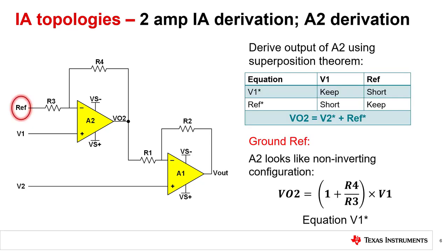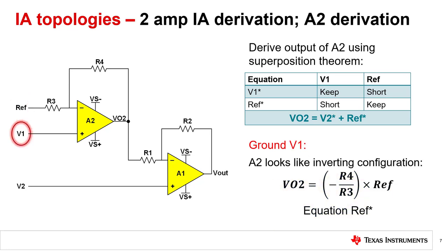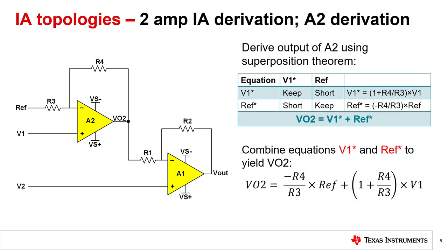Let us first derive the output of amplifier A2 using superposition. If we ground ref, this now looks like the familiar non-inverting configuration with V02 equal to 1 plus R4 over R3 multiplied by V1. We will call this equation V1 star. Now, let us ground V1. A2 now looks like an inverting amplifier with V02 equal to negative R4 over R3 multiplied by ref. We will call this equation ref star. Combining V1 star and ref star yields V02, which simplifies to the following equation. We will use this equation later.